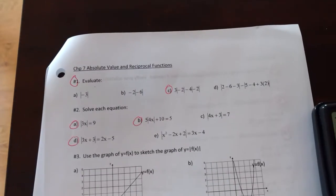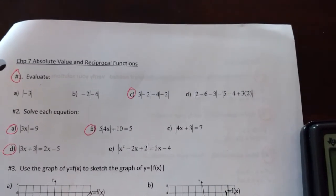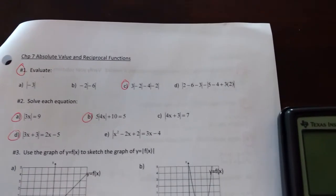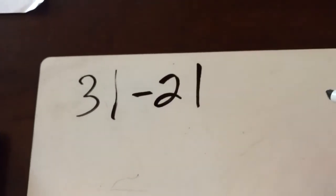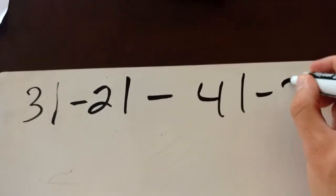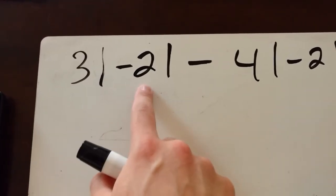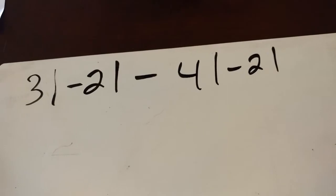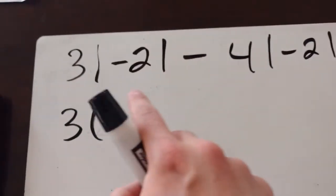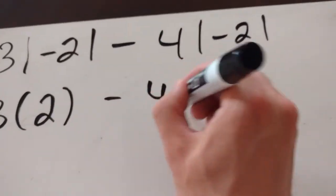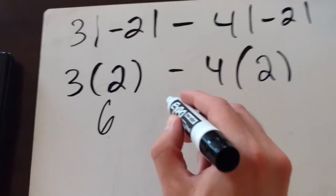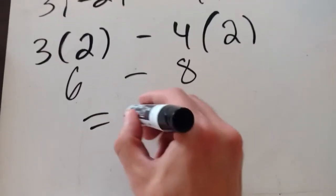The first question we're going to do is question 1c. It says evaluate: we have three times the absolute value of negative two, minus four times the absolute value of negative two. Just remember, absolute value turns whatever is inside into a positive number. So we take the absolute value of each negative two first — treat the absolute value bars like brackets in order of operations. This becomes 3×2 − 4×2, which is 6 − 8, giving us a final answer of negative two.